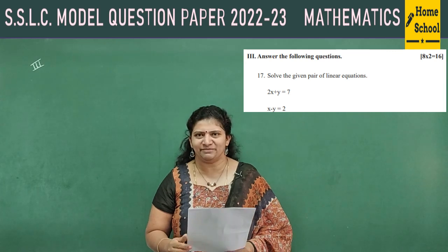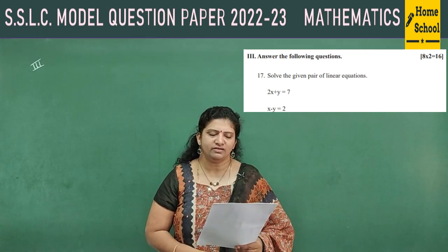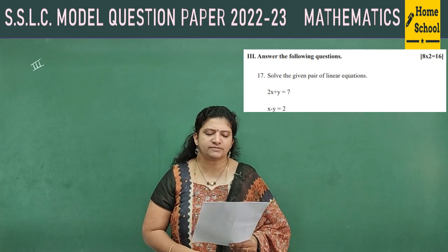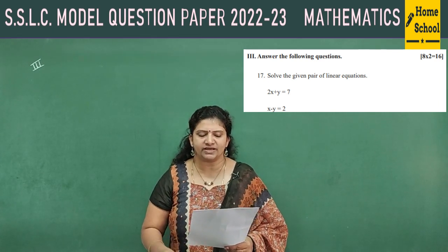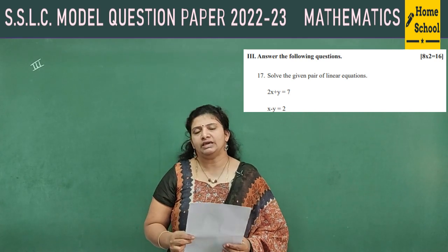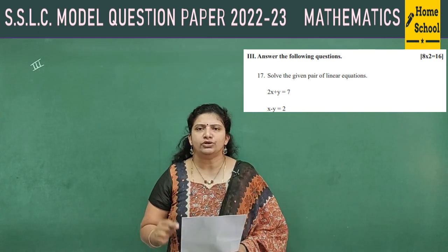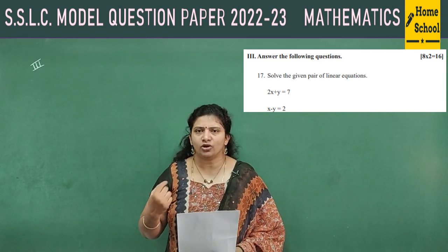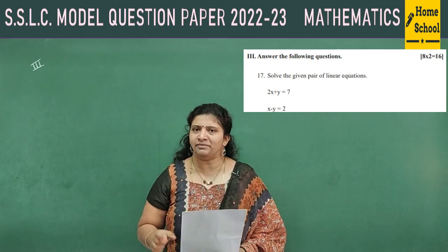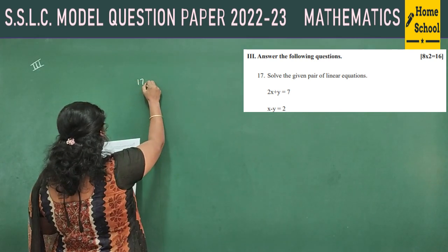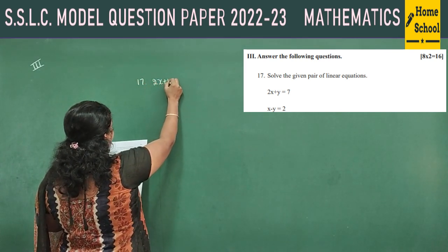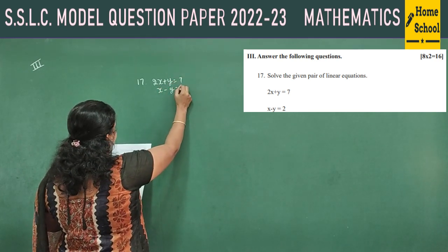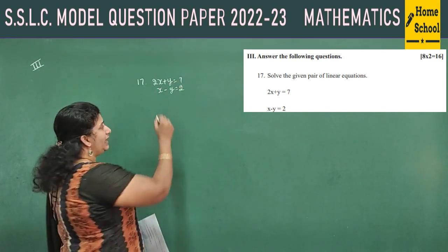Third main: answer the following questions. In this main you'll have 8 questions, each carries 2 marks — 8 into 2 is 16 marks. Question 17: solve the given pair of linear equations — 2x + y = 7 and x − y = 2. You can choose your own method: substitution, cross multiplication, or elimination.